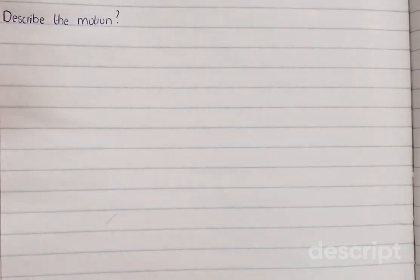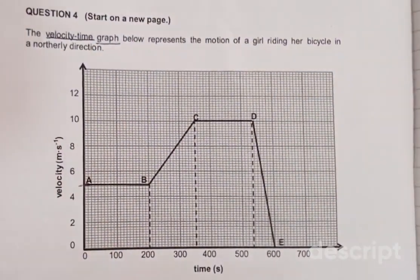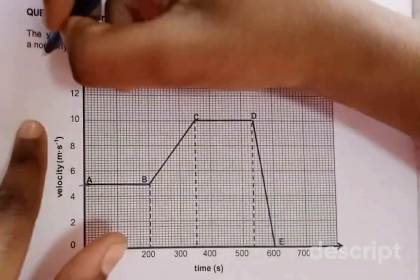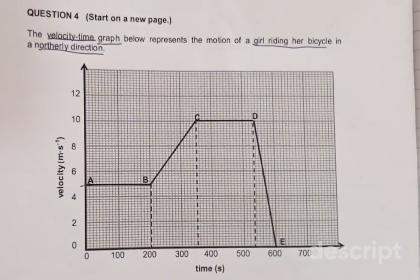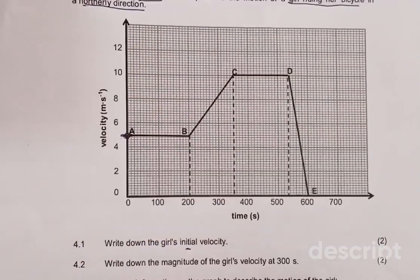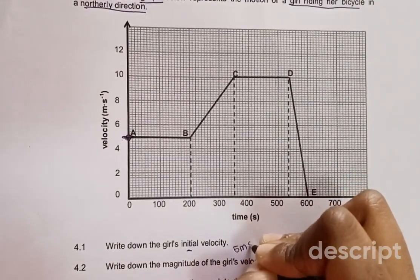The question you are most likely to come across in the exam is where they tell you to describe the motion. I'll use a past paper question to help us. In this question, we have a velocity-time graph that represents the motion of a girl riding a bicycle in a north direction. The initial velocity — where the graph starts — is 5 meters per second.